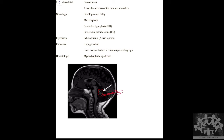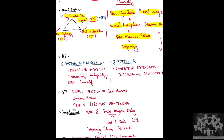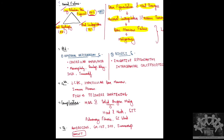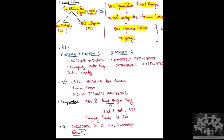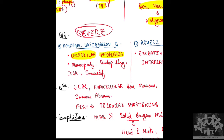Cerebellar hypoplasia points toward a differential diagnosis — or a severe subtype — of Dyskeratosis Congenita. The first syndrome is Hoyeraal-Hreidarsson syndrome, where the most characteristic feature is cerebellar hypoplasia, along with microcephaly, developmental delay, IUGR, and immunodeficiency.